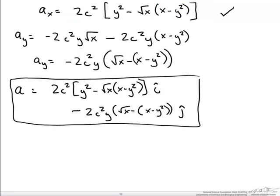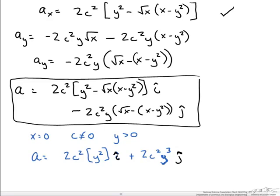We can now ask what happens to a fluid particle at specific locations in the Cartesian coordinate system. For example, at x equals 0 for any constant c not equal to 0 and for y greater than 0, we find positive acceleration in both the x and y directions. You can substitute specific values to see what the acceleration looks like in these two coordinates. Hopefully this gives you a good idea of how to calculate acceleration given a velocity field.